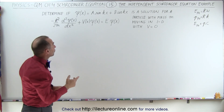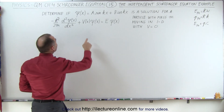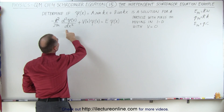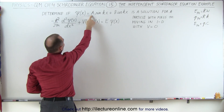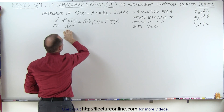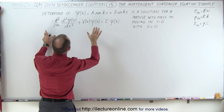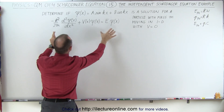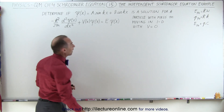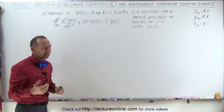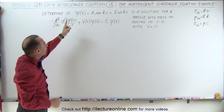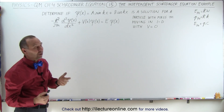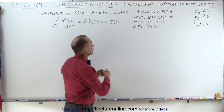What we need to do now is find the second derivative of this wave function with respect to x, plug it into the equation, and see if the left side does indeed equal the right side. First, we're going to take the first and then the second derivative of that wave function.